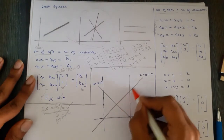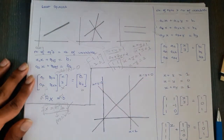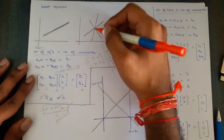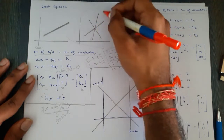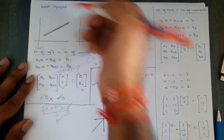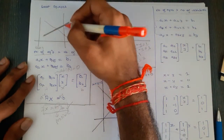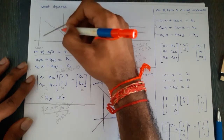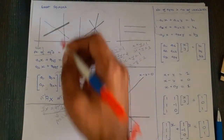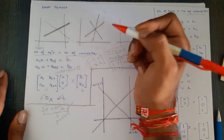What more commonly happens is something like this: three distinct lines where there is no single common intersection point. No point satisfies all three lines simultaneously, unlike the ideal case where there was a common intersection.